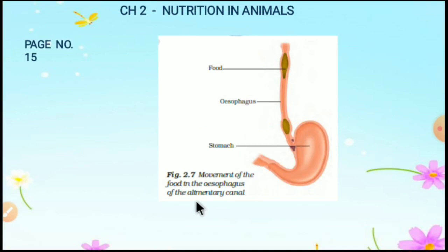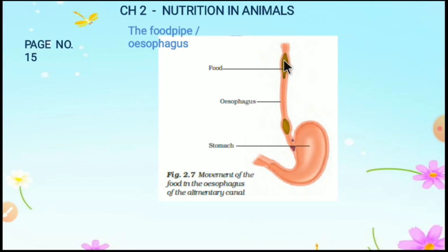On page 15, we also learn about the food pipe or esophagus. The swallowed food passes into the esophagus. The food pipe runs along the neck and the chest. The food is pushed down by movement of the wall of the food pipe.